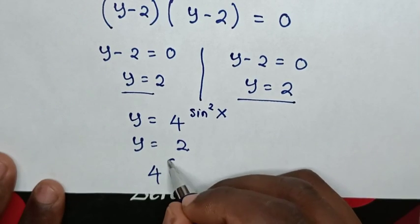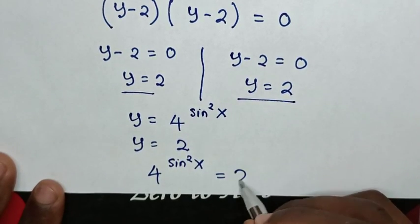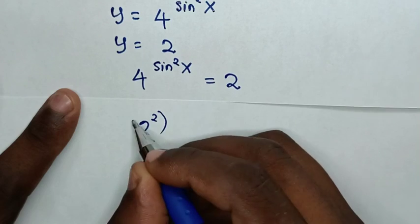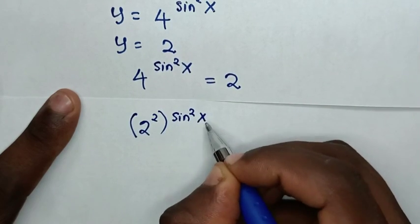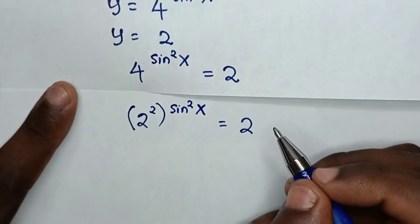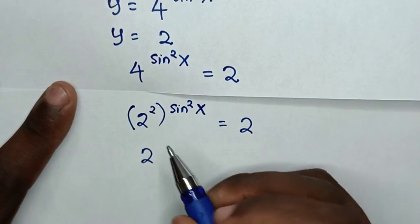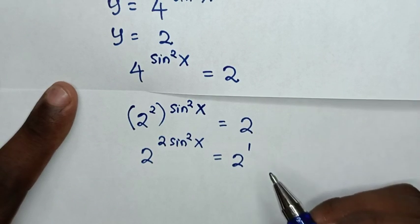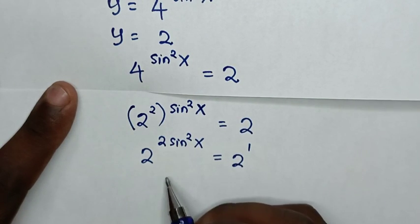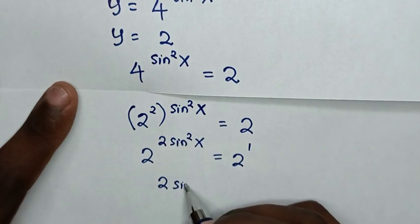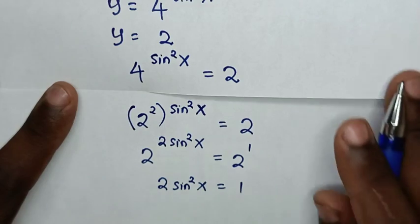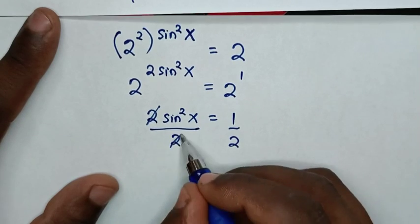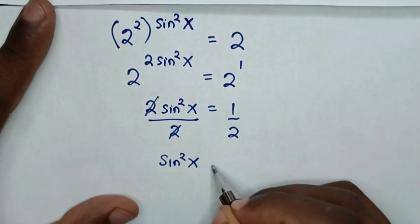All solutions give y equal to 2, so 4 power of sine squared x is equal to 2. Since 4 is the same as 2 squared, we have 2 squared power of sine squared x equals 2 power of 1. Because the bases are the same, we compare the powers: 2 sine squared x equals 1. Dividing both sides by 2 gives sine squared x equal to 1 over 2.